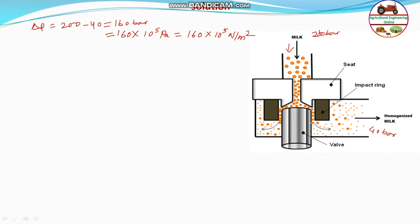Next, the milk flow rate Q is given as 30 liters per hour. Milk goes inside the homogenizer and also comes out at 30 liters per hour. Converting: 30 liters per hour equals 30 into 10 to the power minus 3 cubic meters per hour, because 1 liter equals 10 to the power minus 3 cubic meters.